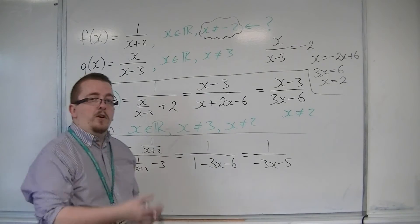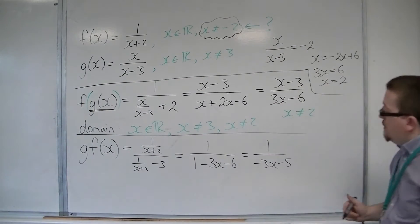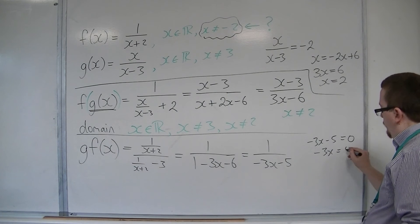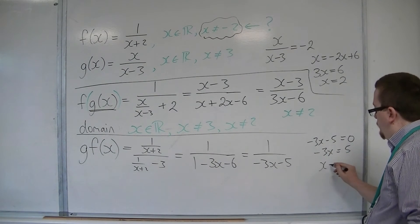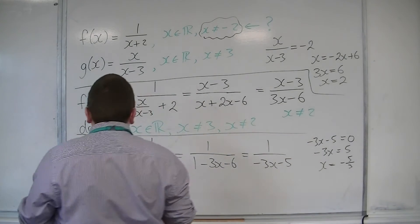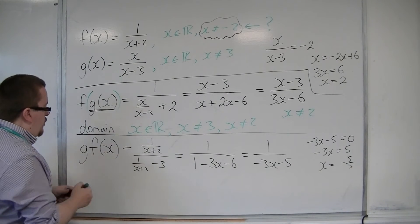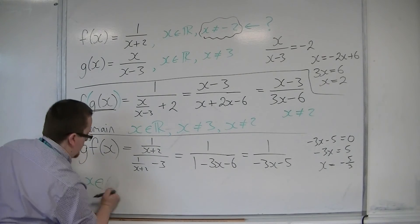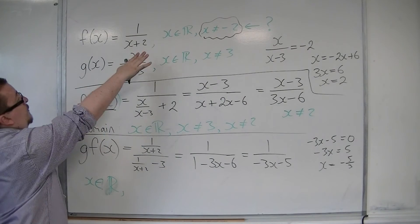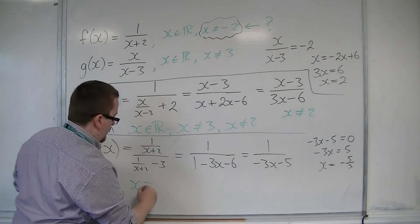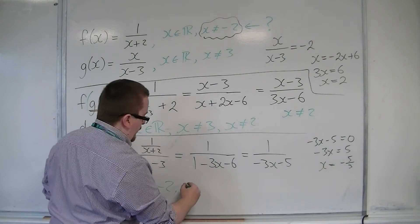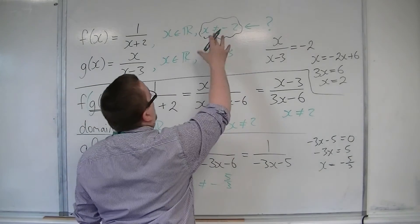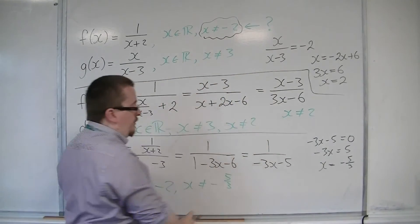We don't want that denominator to be 0, so minus 3x minus 5 equals 0. Adding 5 to both sides and dividing both sides by minus 3, we find x equals minus 5 thirds. So we would have the initial restriction that x can be any real number apart from what f was unable to take, which is minus 2, and it can't be minus 5 thirds. This restriction is coming from the x not equal to 3 condition in g, now being transformed into x not equal to minus 5 thirds, effectively.